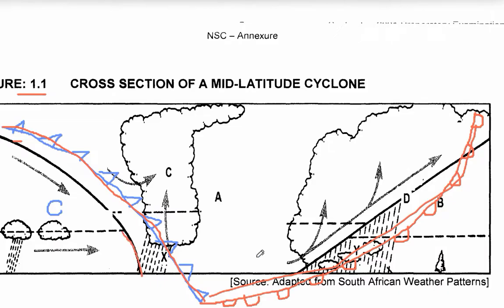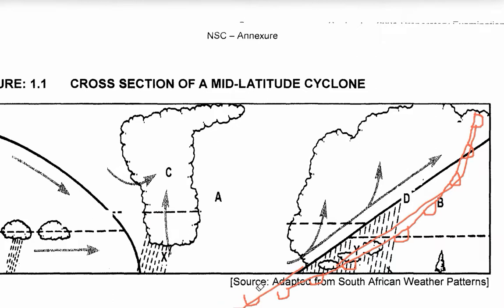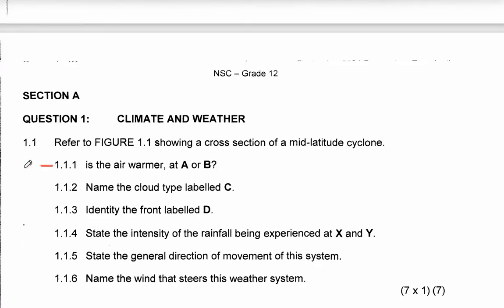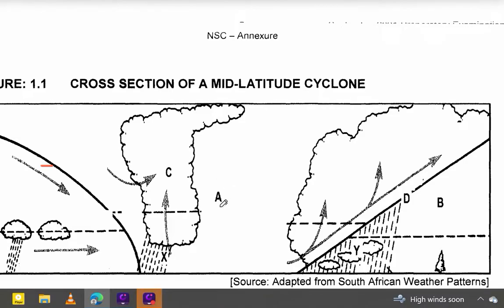You can see those lines for the cold front and this line for the warm front. Let's erase that so you can focus when it comes to our questions. Now let's come into our questions. The very first question, 1.1.1, asks: is the air warmer at A or at B?